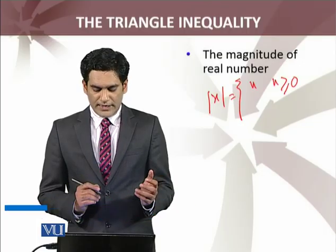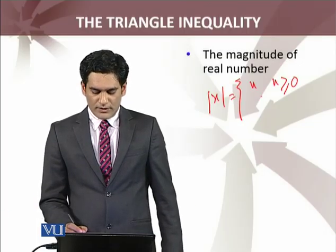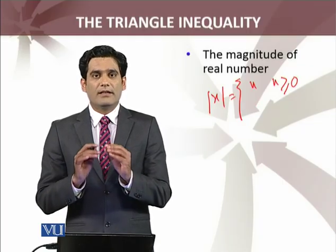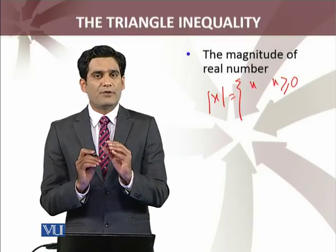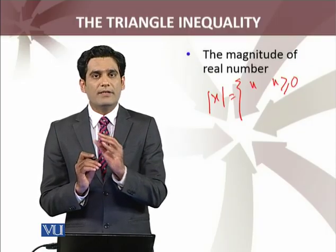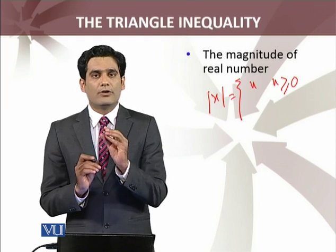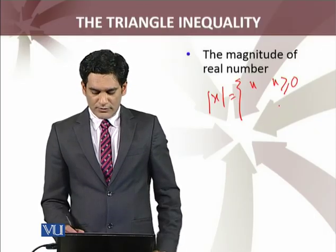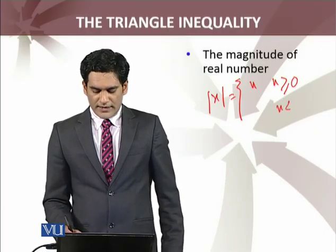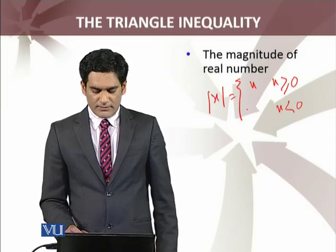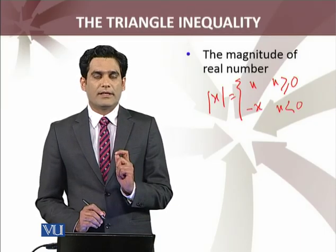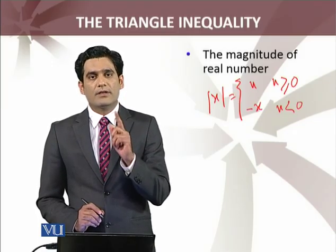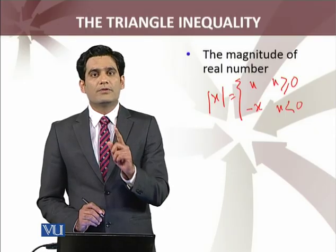Magnitude of a real number, we write this: |x| equals x whenever x is greater than or equal to 0. When x is your real number which is non-negative, which is either 0 or greater than 0, positive number, then answer is this. But when you have a real number which is negative real number as an input, then the answer is minus of that real number.